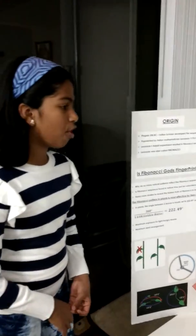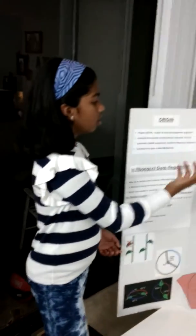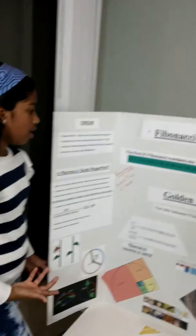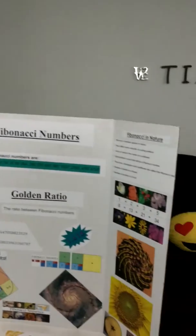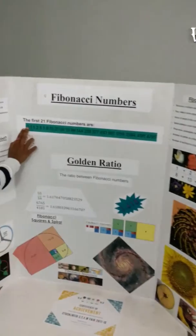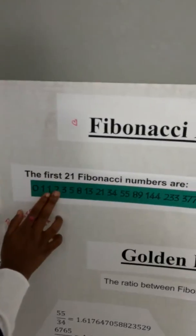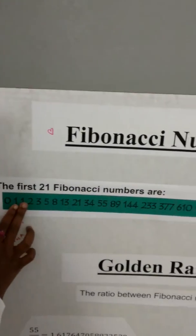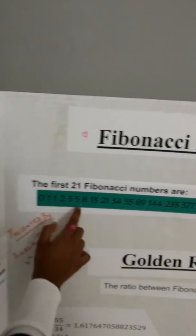Before I start, let me tell you what Fibonacci Numbers are. Fibonacci Numbers are a sequence of numbers where you add the number before. So, 0 plus 1 equals 1, 1 plus 1 equals 2, 2 plus 1 equals 3, 3 plus 2 equals 5, and it keeps going on.